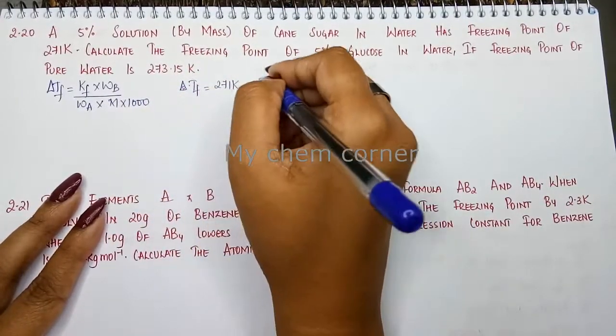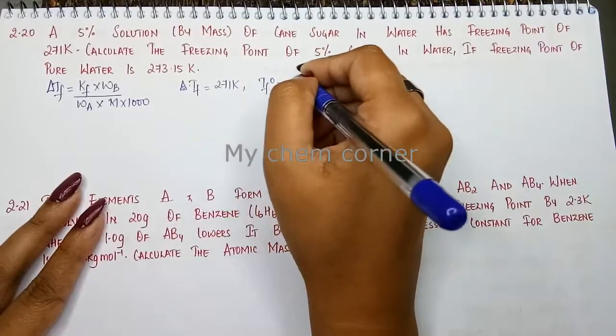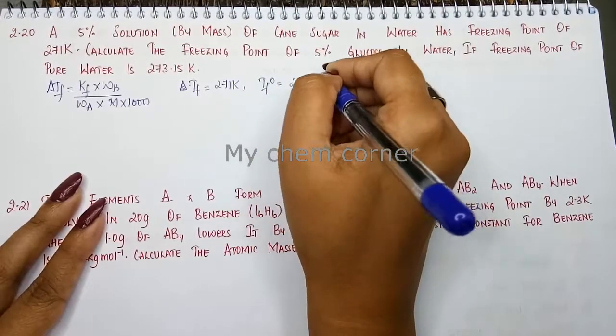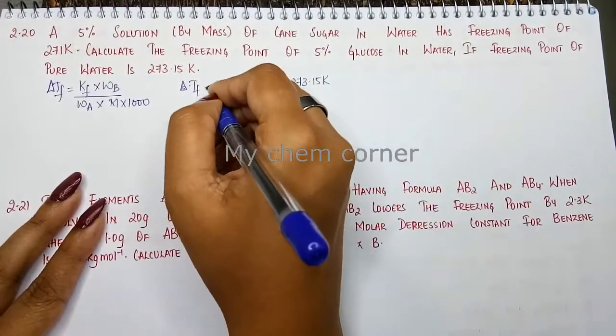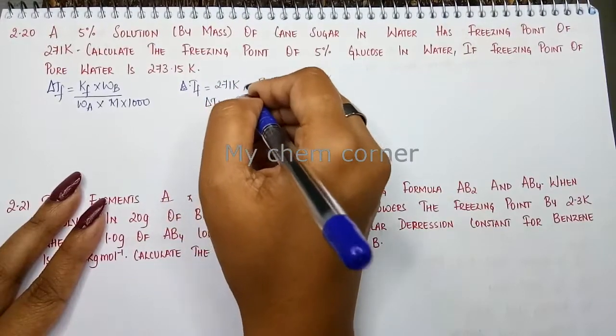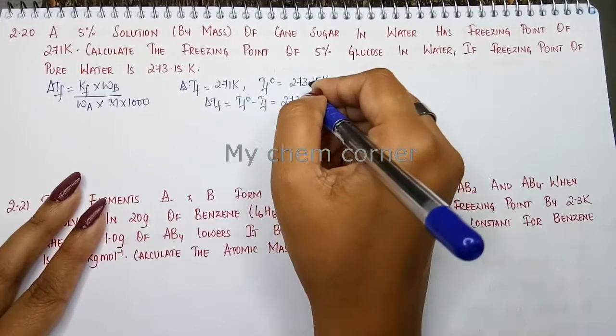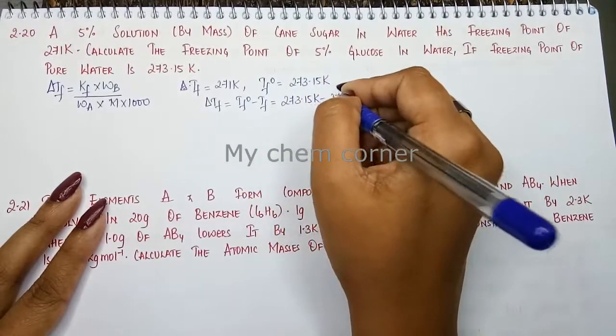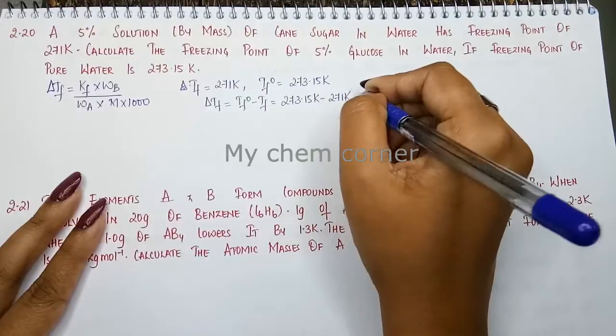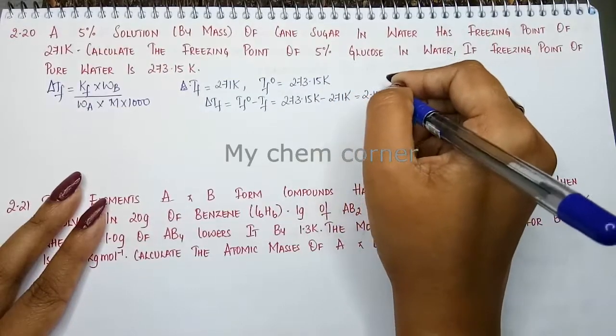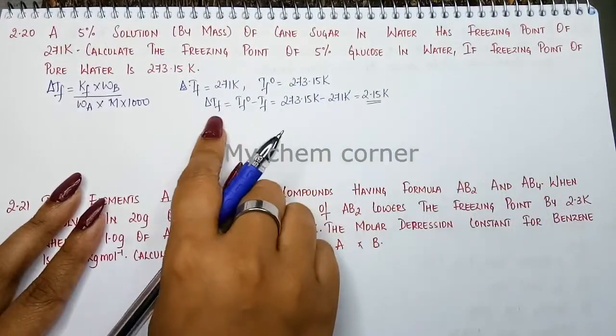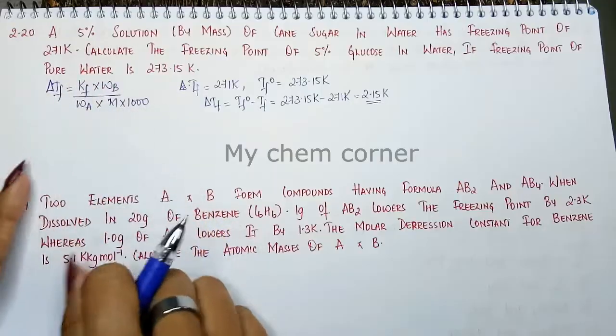Delta Tf is going to be Tf0 minus Tf. Tf0 is 273.15 Kelvin minus 271 Kelvin, which is equal to 2.15 Kelvin. So that's delta Tf. Next we need to see wherever we have A, we are going to have a solvent, and wherever we have B, we are going to have a solute.